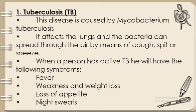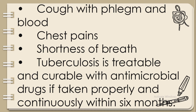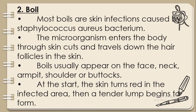Additional TB symptoms include cough with phlegm and blood, chest pains, and shortness of breath. Tuberculosis is treatable and curable with antimicrobial drugs if taken properly and continuously within six months. Number two: Boil. Most boils are skin infections caused by Staphylococcus aureus. The microorganism enters the body through skin cuts and travels down the hair follicles.